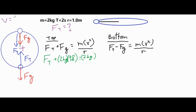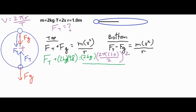Our velocity is 2πR over T, where 2π times the radius is the circumference of the circle — the distance around the circle — and capital T is the period, the amount of time it takes to complete that circle. So for our velocity, we substitute: 2π times R, which is 1 meter, over T. Our period is 2 seconds divided by 2, and that entire thing is squared because it's V squared in our formula. Going back to finish: M times V squared divided by R, where R equals 1.0. The twos cancel, leaving just π times 1, which is π, so π squared times 2 divided by 1 gives us 19.74 newtons.